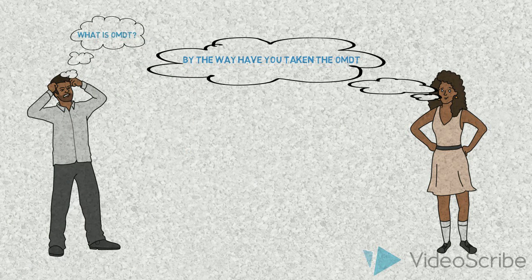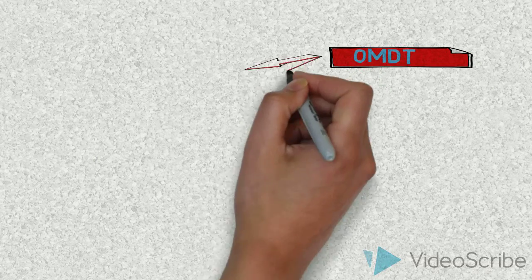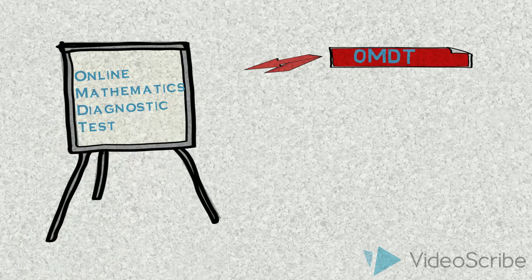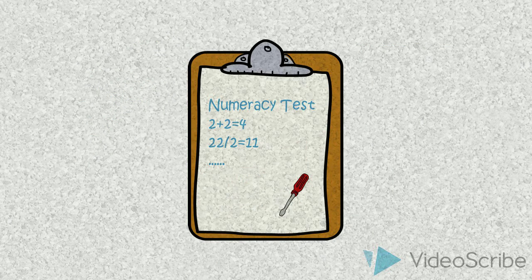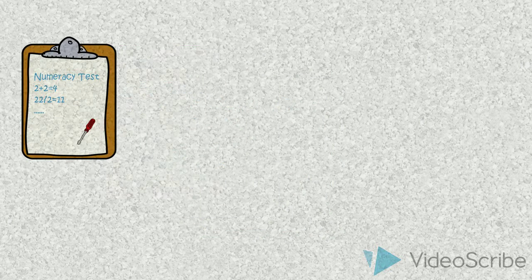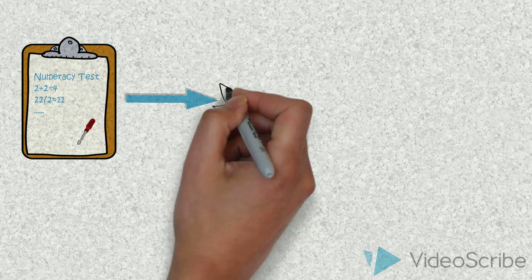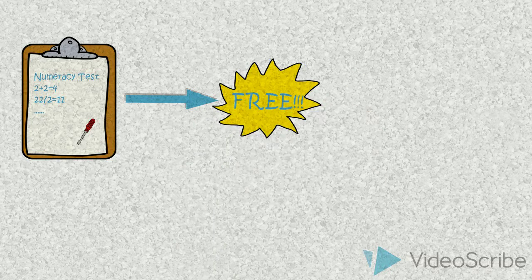You know, last year when I attended the USP Open Day, I found out that the OMDT means Online Mathematics Diagnostic Test. It's a numeracy test designed to diagnose or detect students' weaknesses in mathematics. And guess what? It's absolutely free, this test.